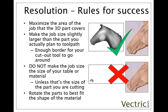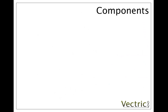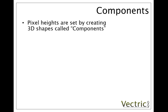So once we've got our part set up, what is it that actually tells the software to push these pixels up to the different Z heights? Basically we use a concept called components. Components are the word we use to refer to the 3D objects in the software. When we create these components that's going to push up the pixel heights, and by combining these together is how we get the overall finished 3D object.